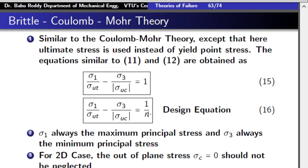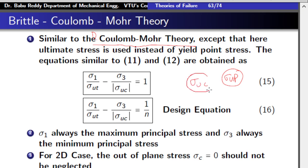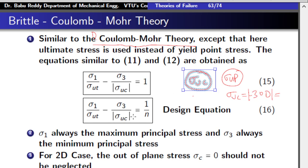The second theory for brittle materials is brittle Coulomb-Mohr theory. This theory is almost identical to the ductile Coulomb-Mohr theory studied earlier — that concept is extended to brittle materials. There, we used yield point as the limiting value; here, we use ultimate compressive stress as the limiting value. Special attention is to be given to the modulus sign: sigma_uc may be given as minus 300, so we take the absolute value (300) in the equation. The equation is: sigma_1 divided by sigma_ut minus sigma_3 divided by sigma_uc equals 1.